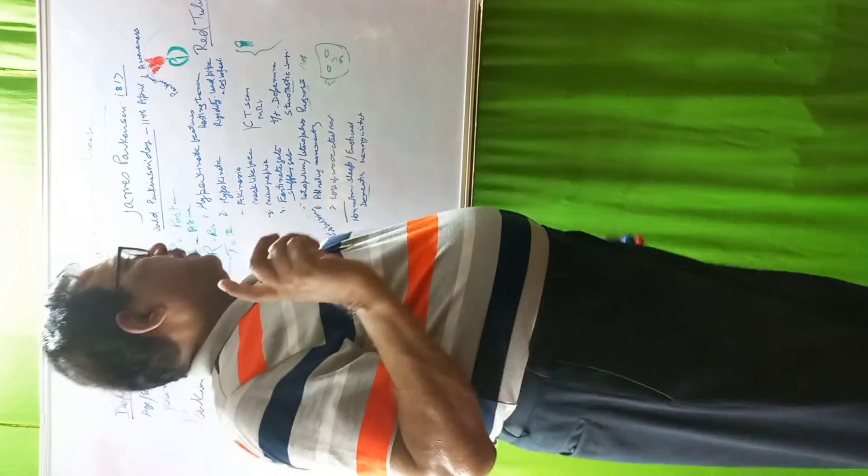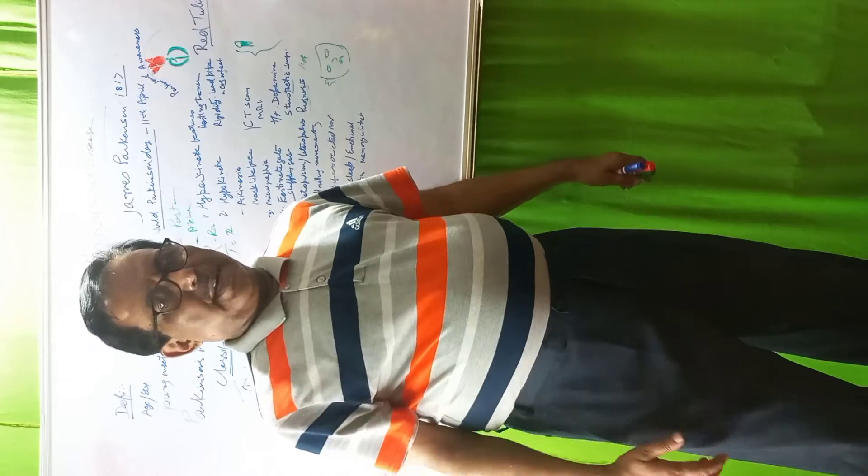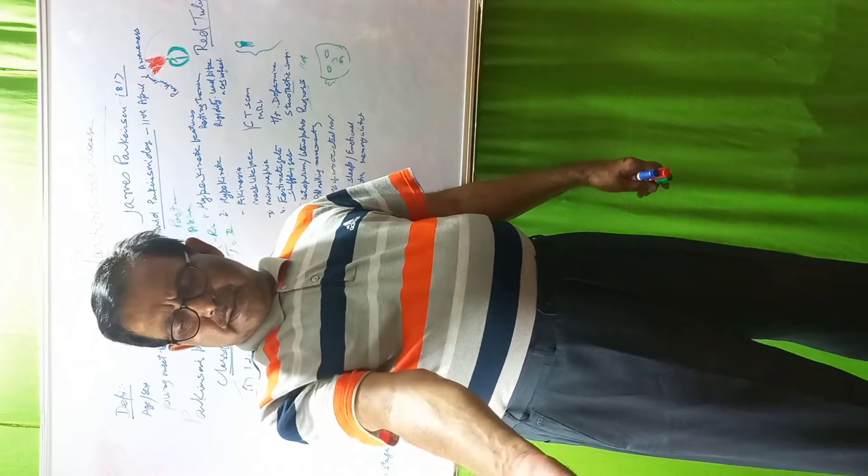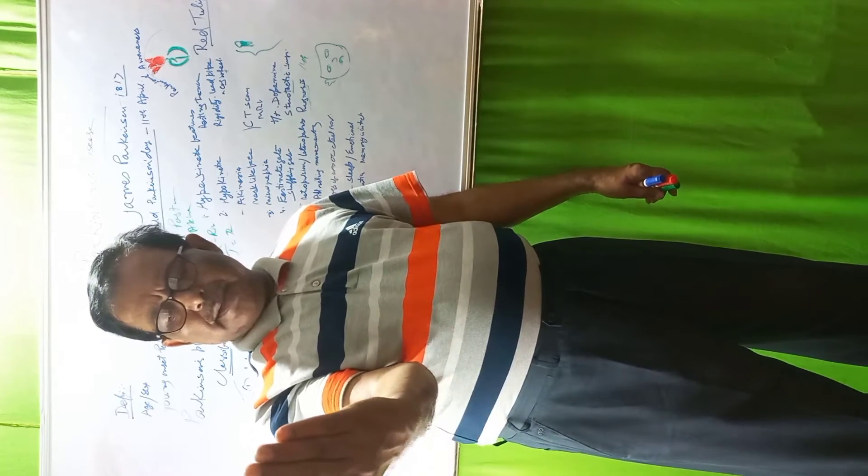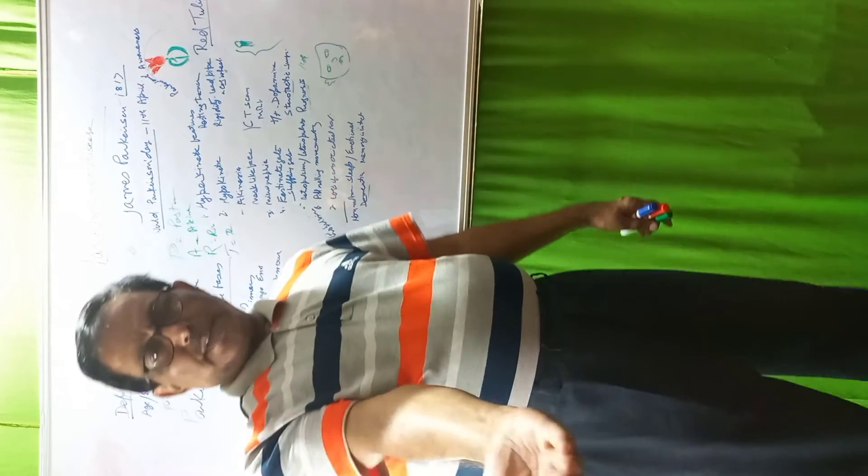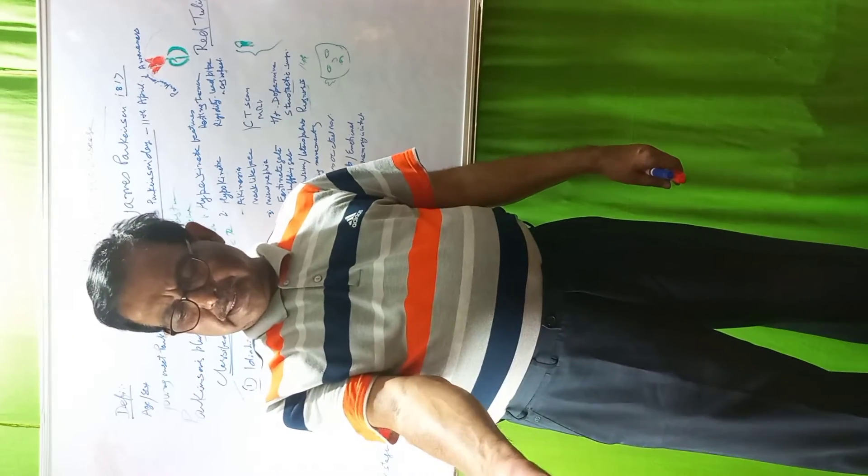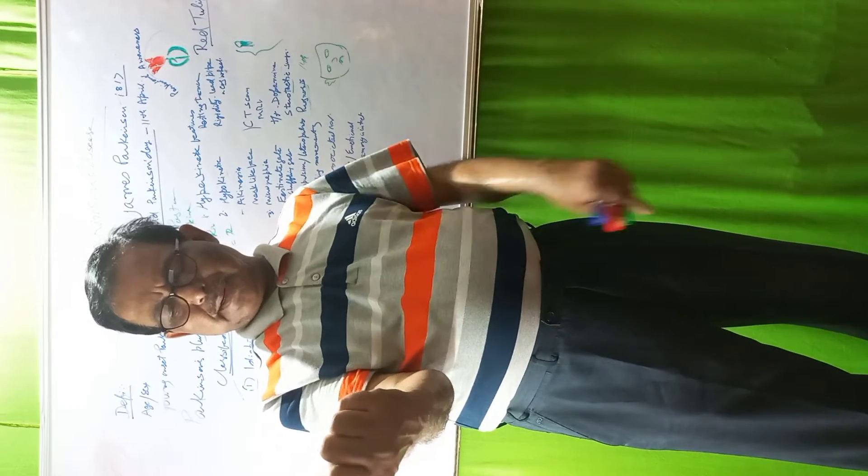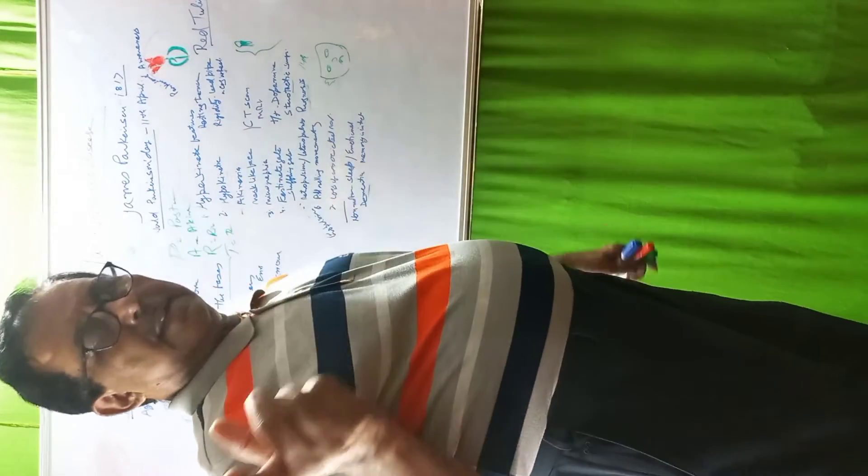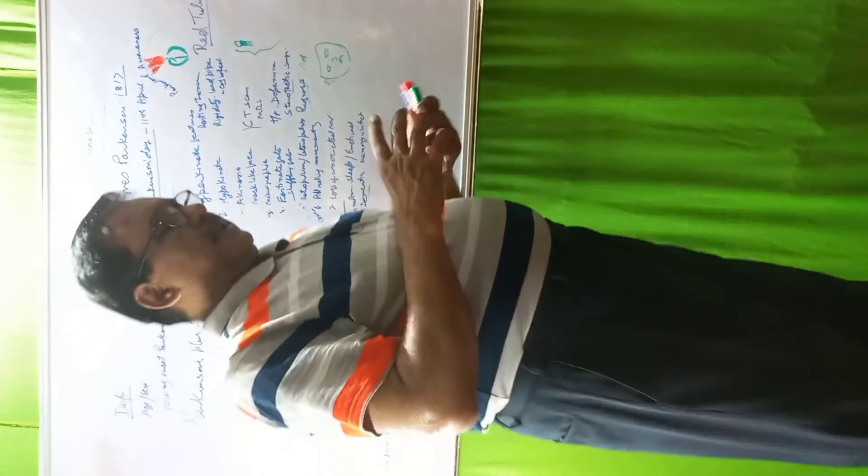Rigidity is characteristic of Parkinson disease. Lead pipe rigidity occurs in lower limb with continuous resistance. Cogwheel rigidity: there is resistance, then it becomes free, then again resistance, then free. This cogwheel appearance is seen in upper limb. Neck muscles become rigid.